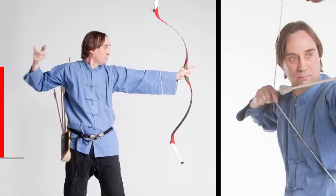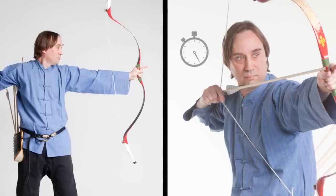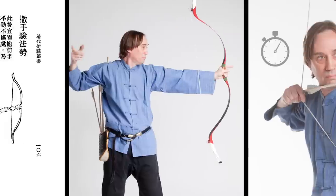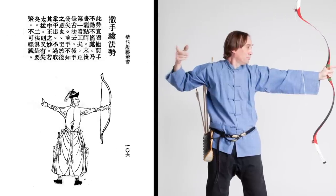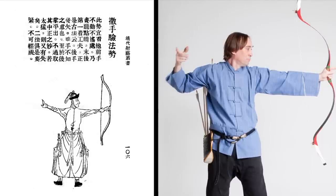A late release refers to holding the full draw long enough to allow the thinking part of the mind to begin analyzing and interfering with the intuitive part of the mind. Ming archery texts describe the timing of release as ripe fruit dropping from the vine. When it is ready, it just releases.